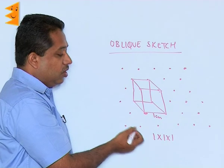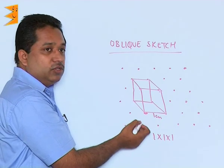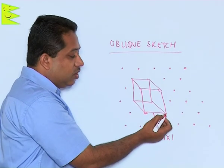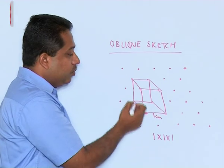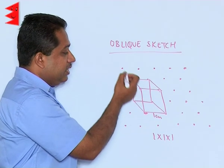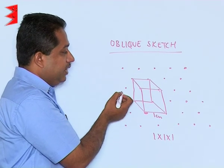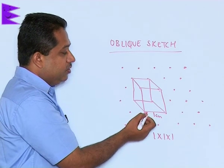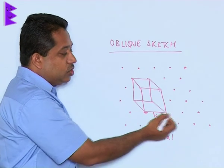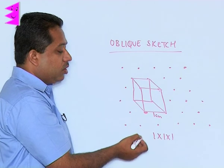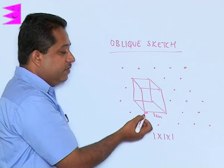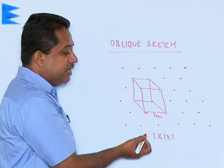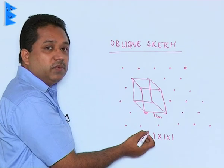Using these dots, we can draw any figure with exact measurements, since the dots are separated by one centimeter both horizontally and vertically. It is easy to draw cubes, cuboids, or any shape by simply joining the dots to get the corresponding figure with correct dimensions.